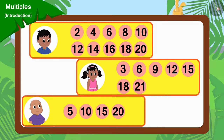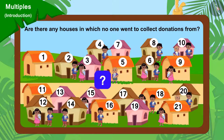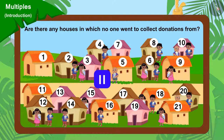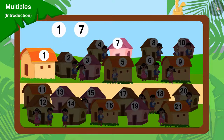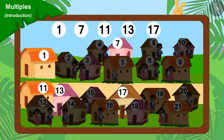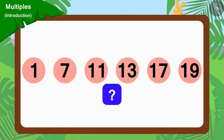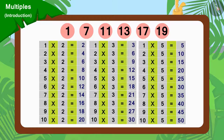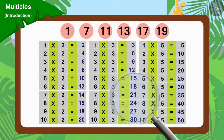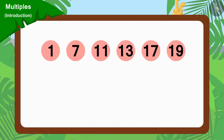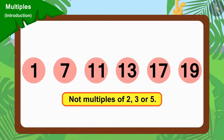Here, the numbers of the houses from where Raju, Pinky and Bablu went to collect donations from are written. Are there any houses in which no one went to collect donations from? Yes, house numbers 1, 7, 11, 13, 17 and 19 are the houses in which nobody went to collect donations from. This is because these numbers cannot be divided by any of the numbers 2, 3 or 5. Therefore, we can say that these numbers are not multiples of 2, 3 or 5.